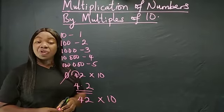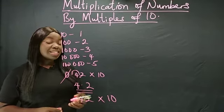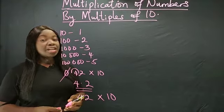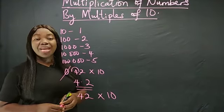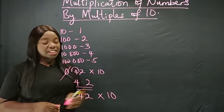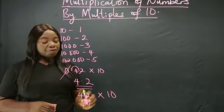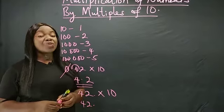Now the next example is 42 times 10. What is the product of 42 and 10? Starting from the decimal point, like I said, but in whole numbers we do not have decimal points. So where do we assume that our decimal point is? Outside. So we have 42. Your decimal point is here, so you count to the right.